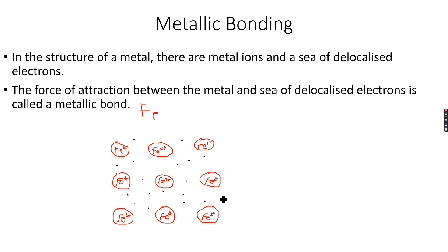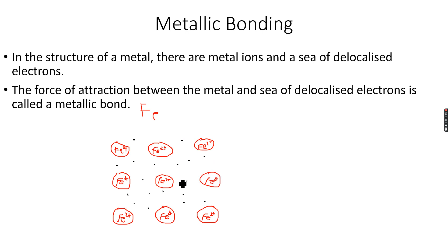These 18 electrons shown in black were lost by the iron atoms to form Fe²⁺ ions. Now, the thing is that these electrons do not belong to any particular atom after they have been lost, because they are mobile — they can move around the entire structure. That is why they are called delocalized electrons; delocalized means they are not bound to any particular ion.